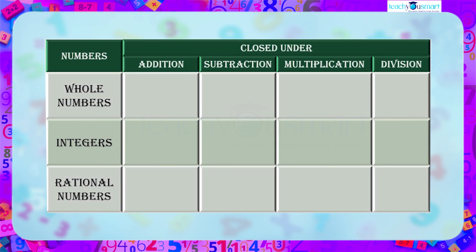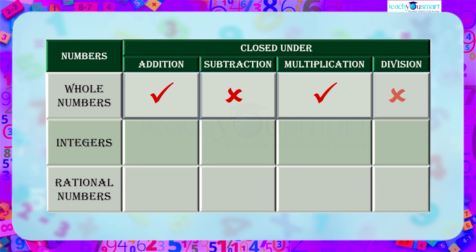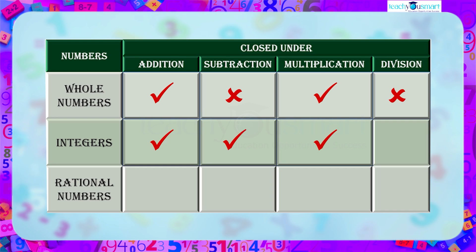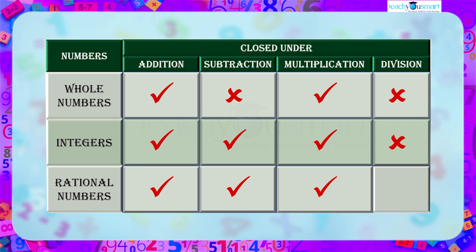So, whole numbers are closed under addition and multiplication. Integers are closed under addition, subtraction, and multiplication. And rational numbers are also closed under addition, subtraction, and multiplication.